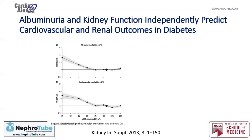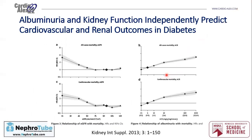It is well known that with declining GFR, all-cause mortality and cardiovascular mortality increase. Also, with an increase in albuminuria, all-cause mortality and cardiovascular mortality also increase. As the first graph shows, from right to left there is a decline in GFR while there is an increase in all-cause mortality and cardiovascular mortality, and the same applies to albuminuria.